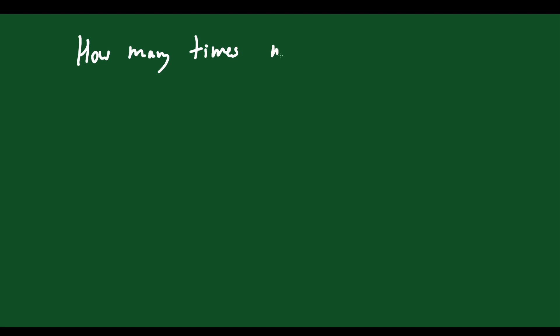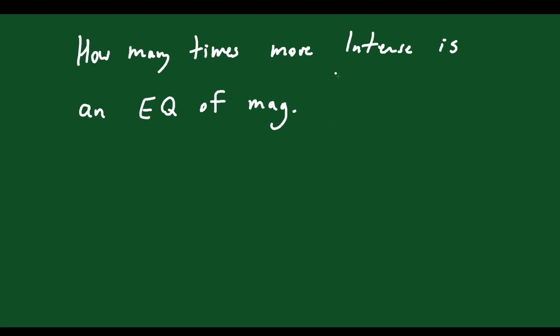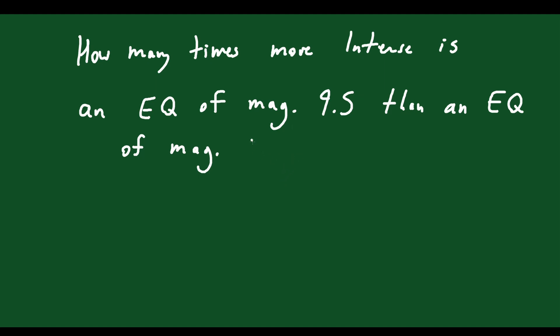Let's do an example. How many times more intense is an earthquake of magnitude 9.5 than an earthquake of magnitude 7.8? What you're looking for is I1 over I2, because that tells you how many times more intense one is than the other — that's the ratio. So you say this is equal to 10 to the exponent of 9.5 minus 7.8.